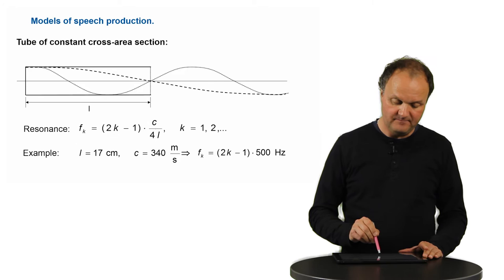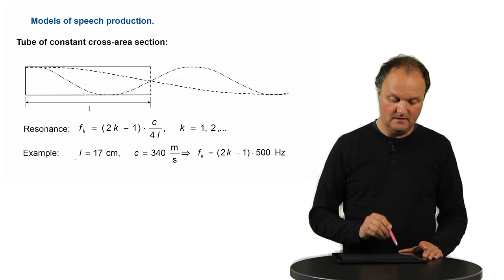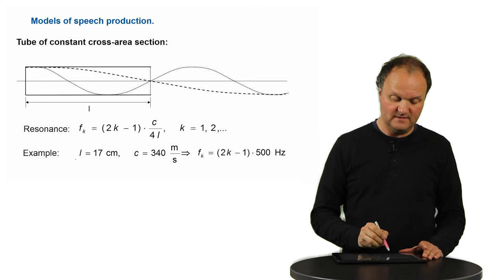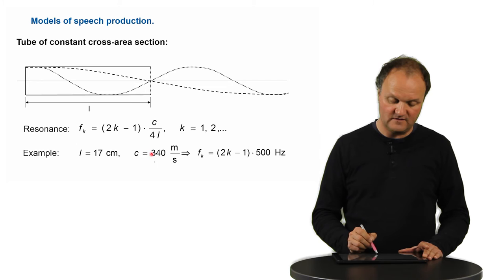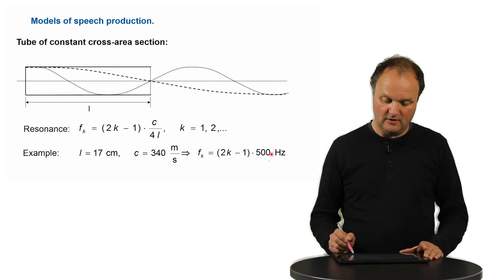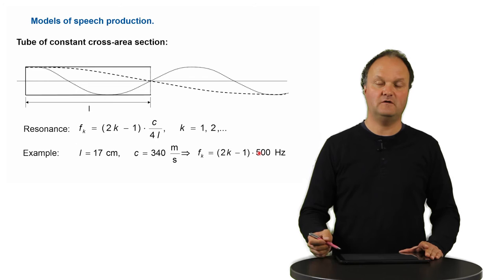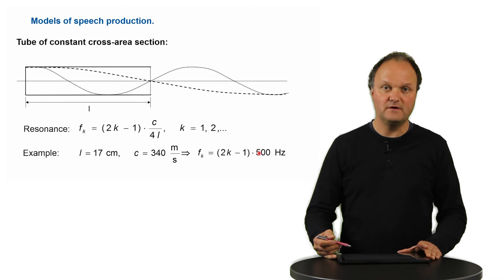In this term we have C, which is the sound velocity, and here we have 4L. L is the length of this tube. If we take a numeric example and assume that the tube from here, from the larynx to the tip of your lips, is approximately 17 centimeters long, and if we assume that the sound velocity is approximately 340 meters per second, then we come to resonance frequencies which are impair multiplicatives of 500 Hz approximately. That means that the formants which can exist in such a tube are 500 Hz, 1,500 Hz, 2,500 Hz, and so on.